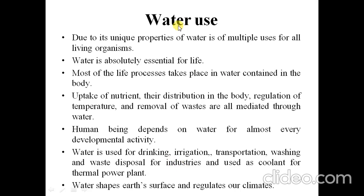Now we will see how water is being used. Due to its unique properties and multiple uses for all living organisms, water is absolutely essential for life. Most life processes take place in the water contained in the body — uptake of nutrients, their distribution in the body, regulation of temperature, and removal of waste are all mediated through water. Human beings depend on water for almost every developmental activity. Water is used for drinking, irrigation, transportation, washing, waste disposal of industries, and as a coolant for thermal power plants. Water also shapes the earth's surface and regulates our climate.